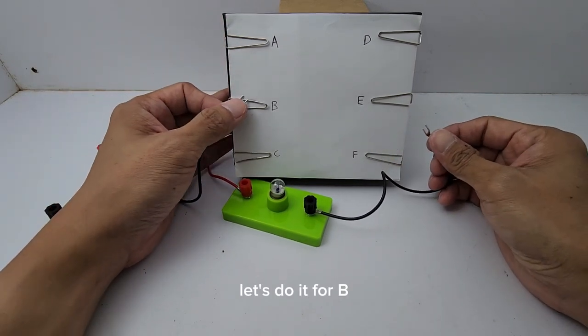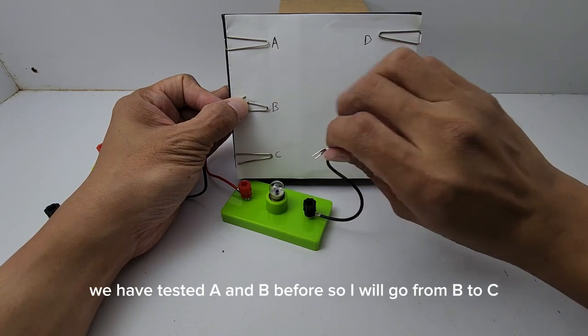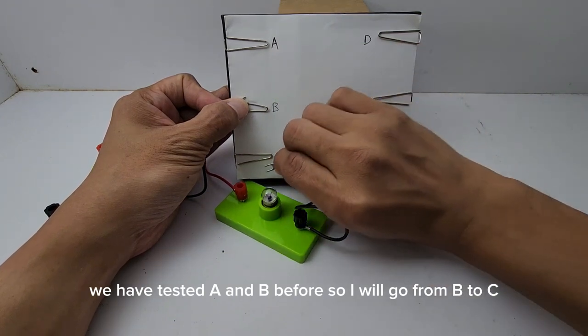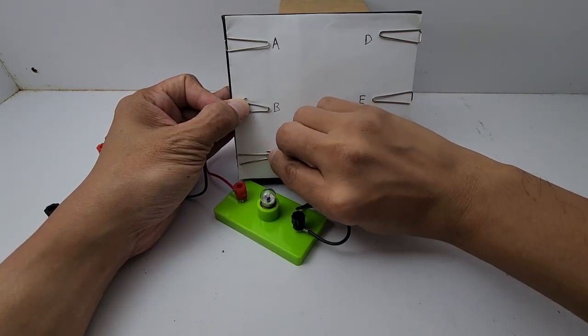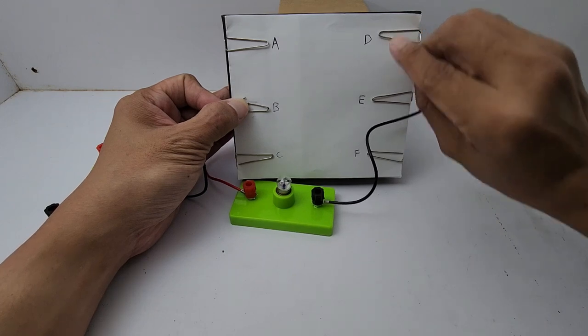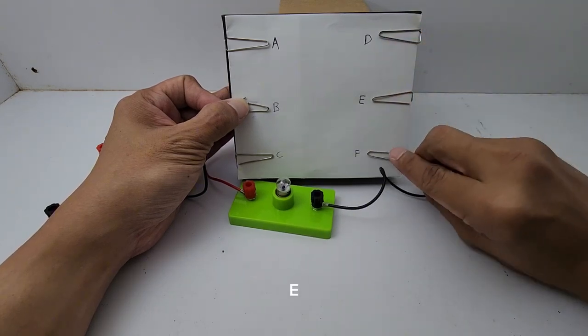Let's do it for B. We have tested A and B before so I will go from B to C to D, E, F.